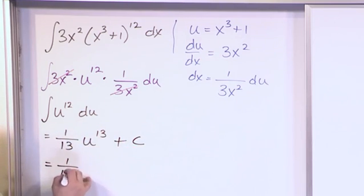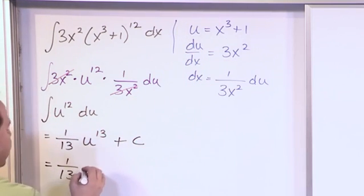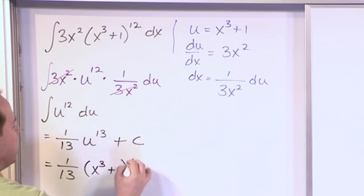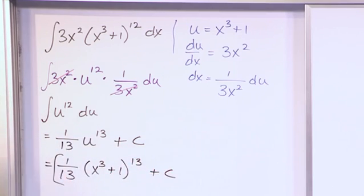So 1 over 13, u we've defined to be x cubed plus 1. So opening the parentheses, we'll say that's x cubed plus 1 to the 13th power plus a constant. And this is the answer: 1 over 13 times x cubed plus 1 to the 13th power plus a constant.